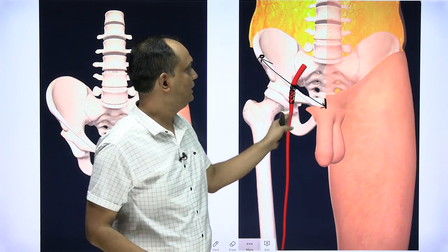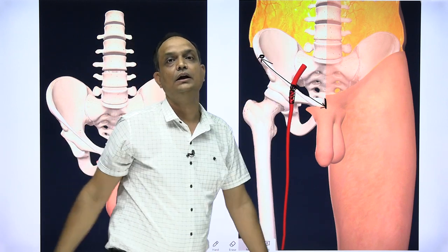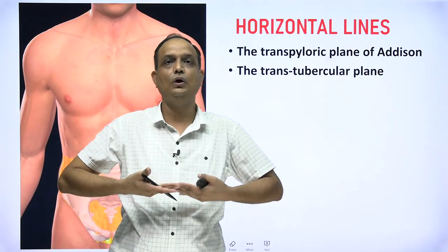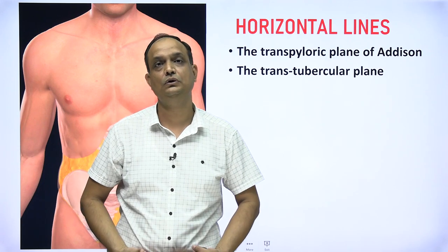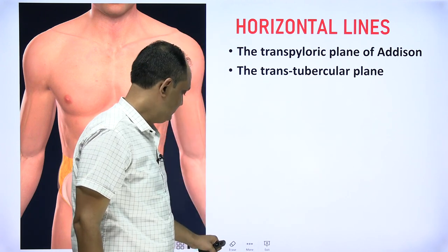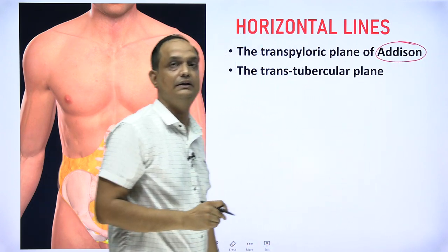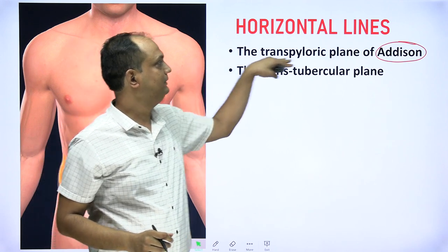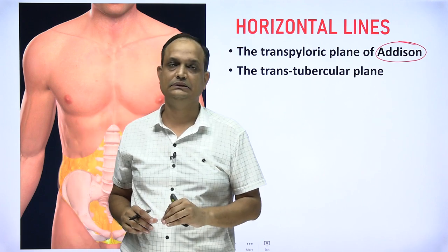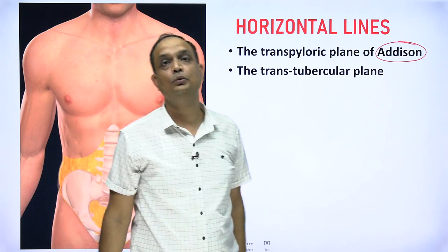The two vertical lines pass from the mid-clavicular point above to the mid-inguinal point below. Now regarding the horizontal planes: there are two — one upper and one lower. The upper horizontal plane is known as the transpyloric plane, also called Addison's transpyloric plane or the plane of Addison. The second plane is the trans-tubercular plane.